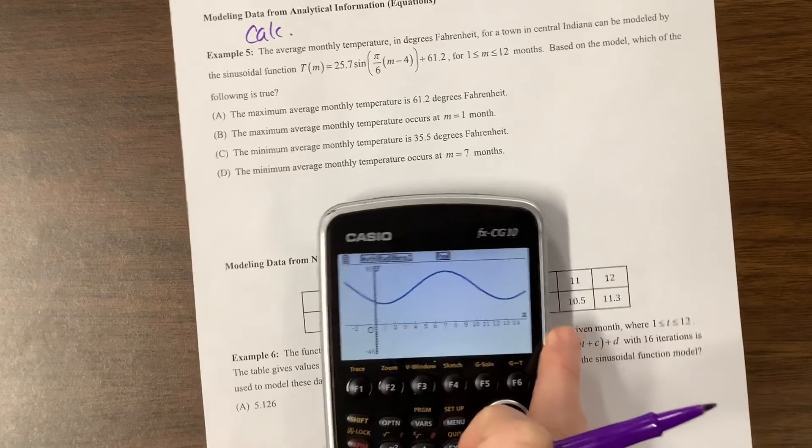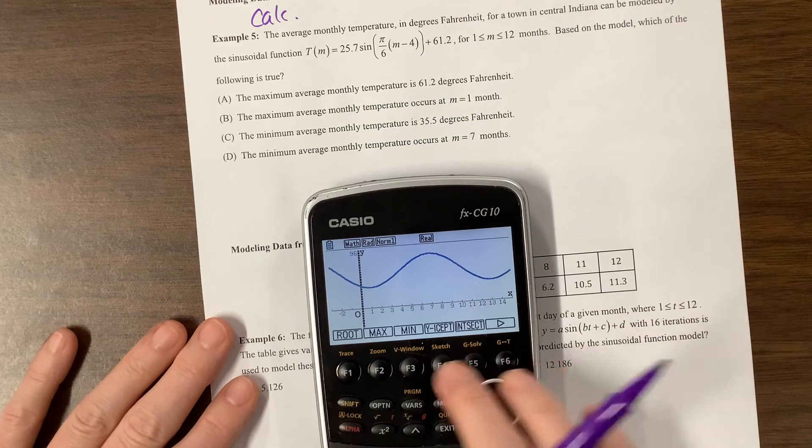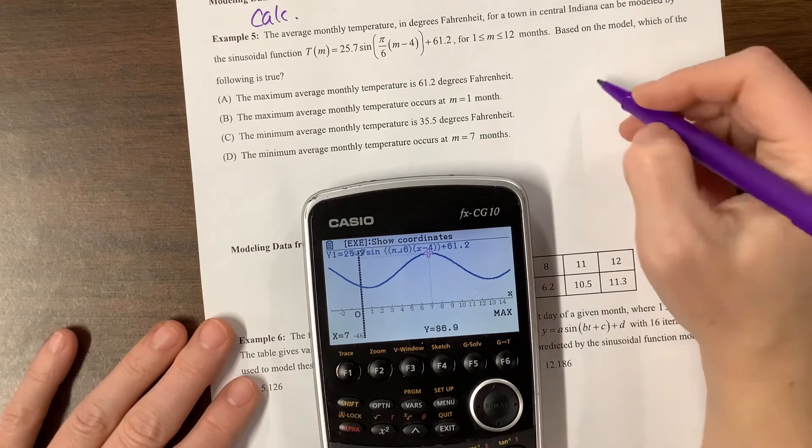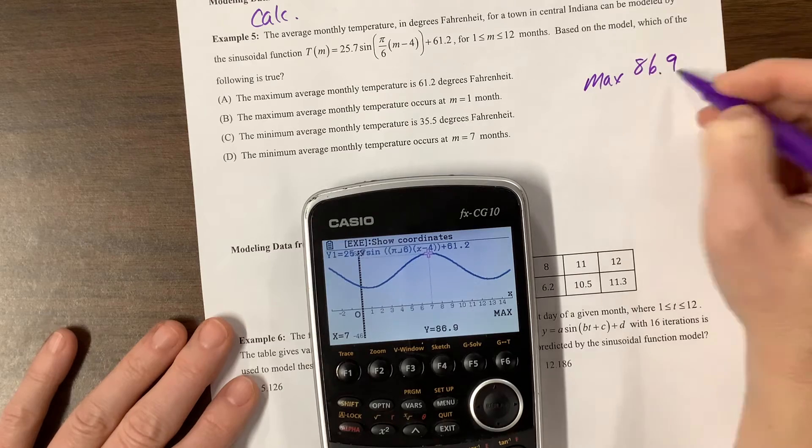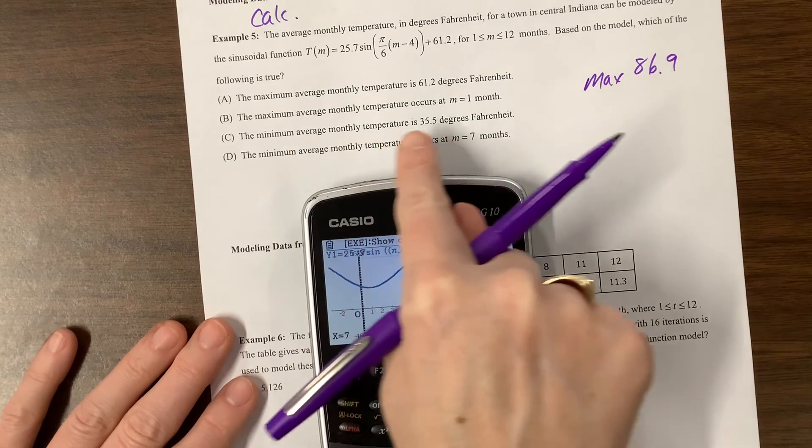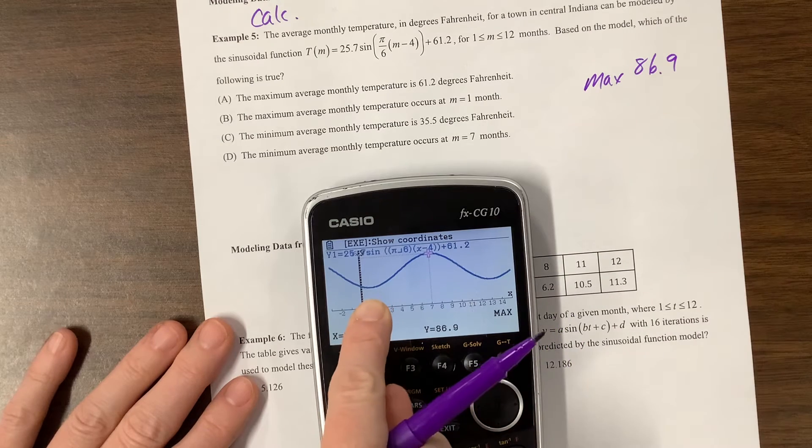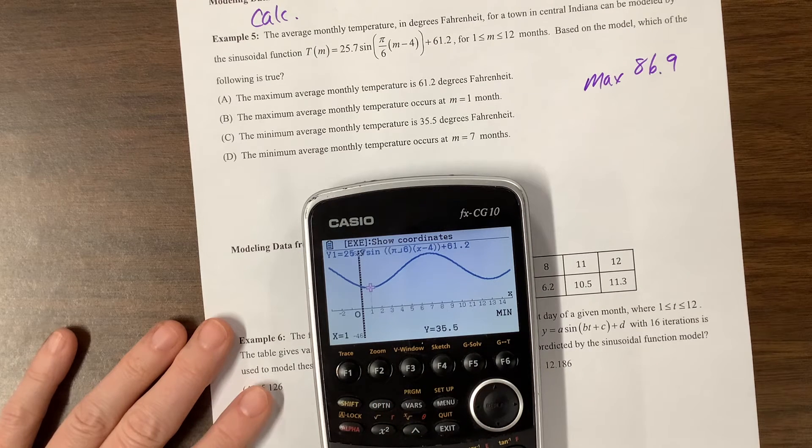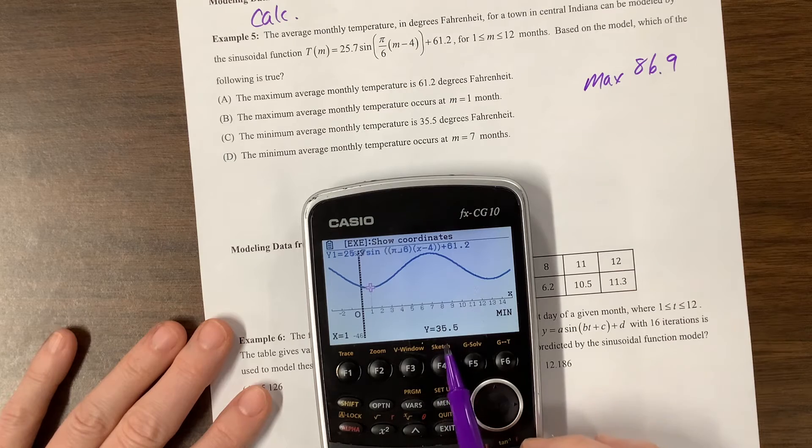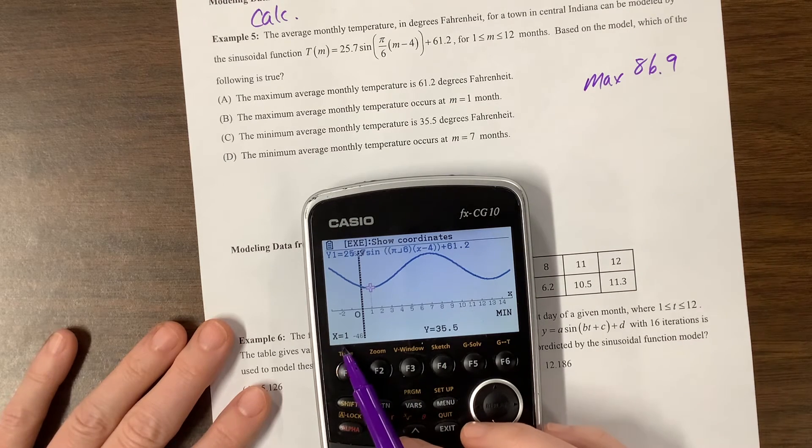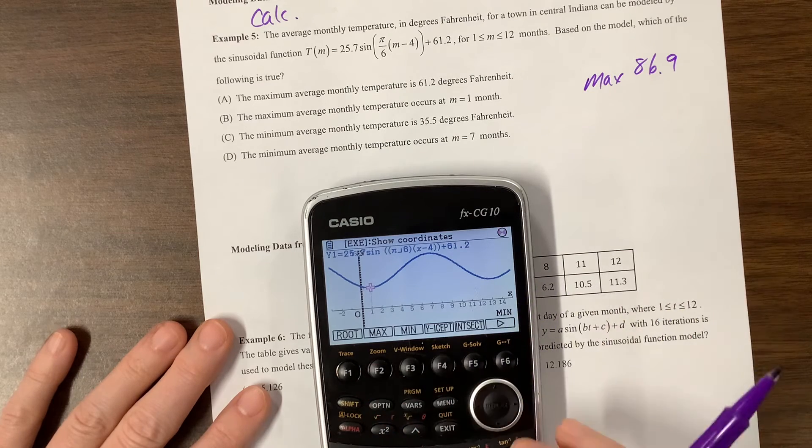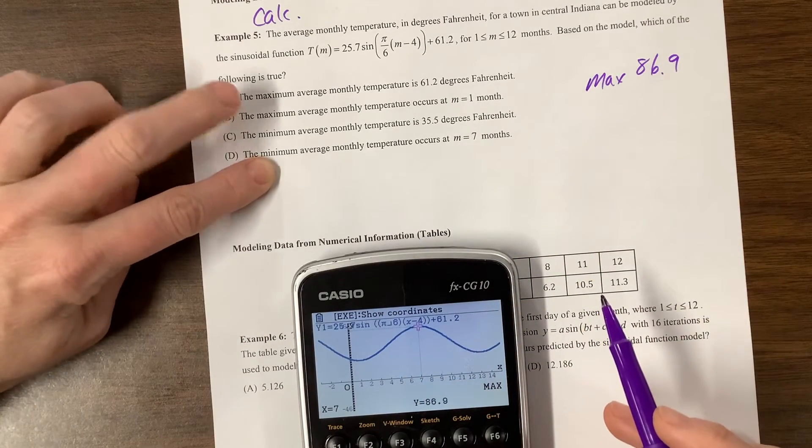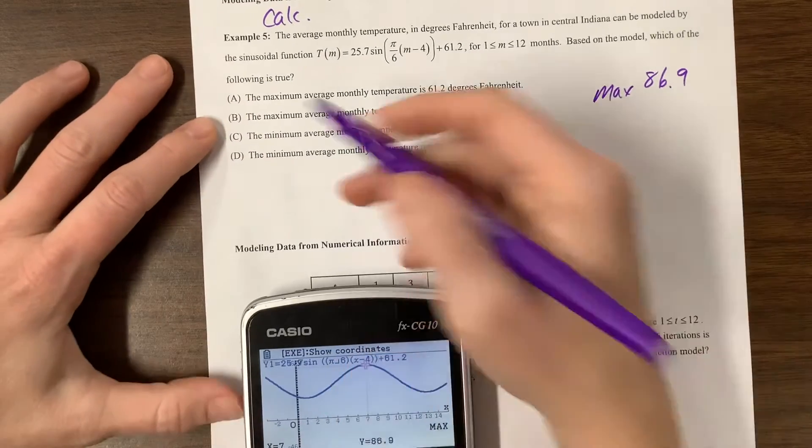They're saying, based on the model, which of the following is true? The maximum average monthly temperature. Let's see. G solve max. The max average monthly temperature was 86.9. The maximum average monthly temperature occurs at one month. No, I don't think so. That doesn't look to be the highest. The minimum, G solve minimum is 35.5. That's probably correct. The minimum occurred at one month. And did the maximum G solve max? That occurred at seven months. So the correct statement is C.